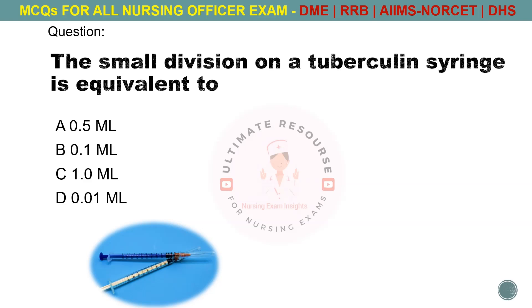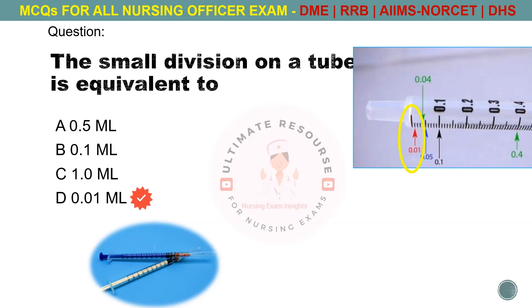The small division on a tuberculin syringe is equivalent to. Options are A. 0.5 ml, B. 0.1 ml, C. 1.0 ml, D. 0.01 ml. The answer is D. 0.01 ml.